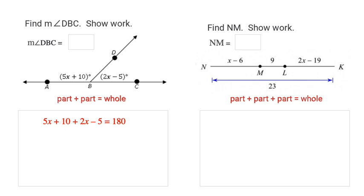All right, and then we'll look at NM on the right-hand side. To solve for NM, it has an expression x - 6, which means we need to know what x equals. So part plus part plus part this time equals whole. Simplify the left-hand side of that equation and solve for x, and then find the value of NM.